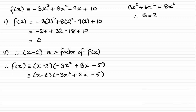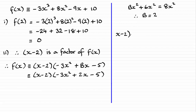Now, I did say there was another way to do this. The other way is to do algebraic long division — you might prefer that. We know that if we divide x minus 2 into our cubic expression — minus 3x cubed plus 8x squared minus 9x plus 10 — we should end up with our quadratic factor. If you're unsure of algebraic long division, do check out the tutorials on that.